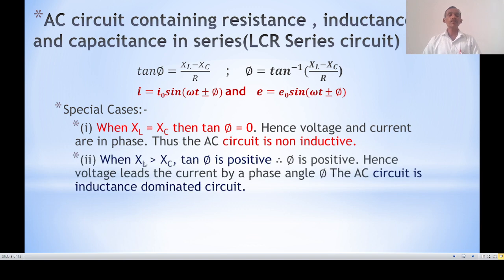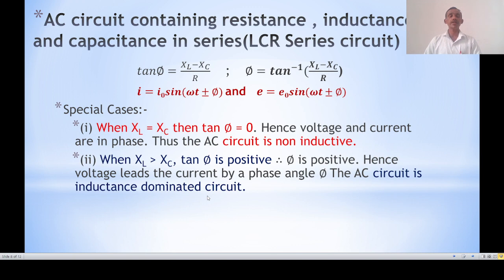Second case: when X_L > X_C, then (X_L − X_C) is positive, so tan φ is positive and φ is positive. Therefore, voltage leads the current, and the equation is E = E₀ sin(ωt + φ) with I = I₀ sin(ωt). The AC circuit is inductance-dominated — it behaves as an inductive dominated circuit.